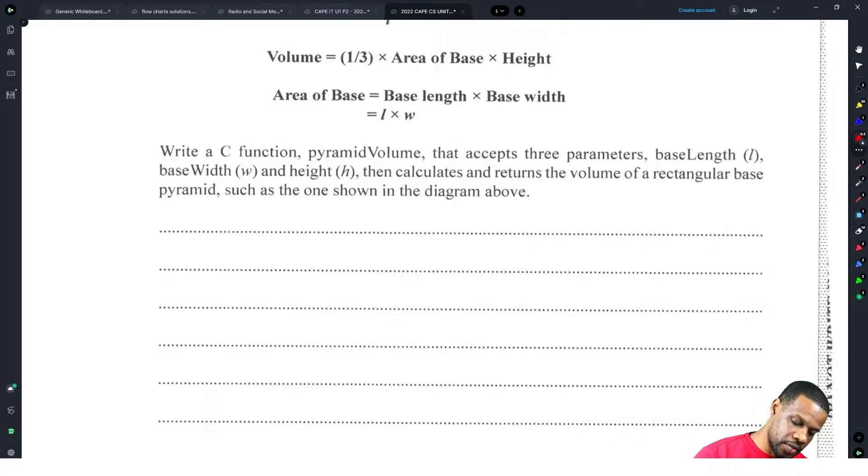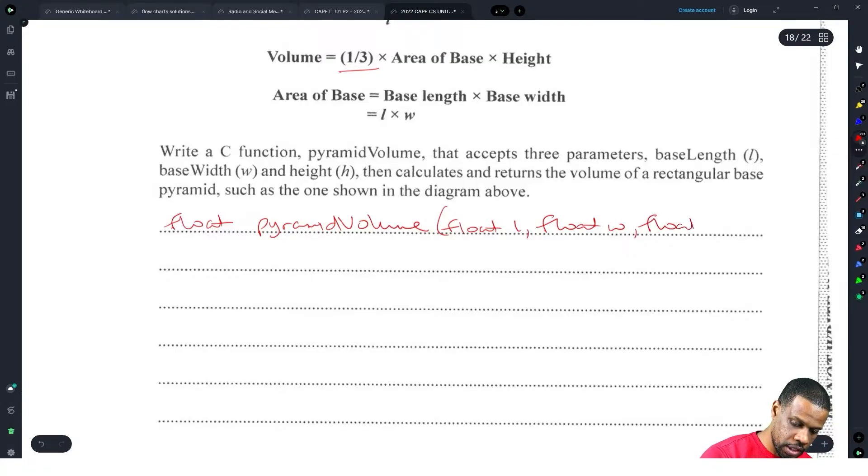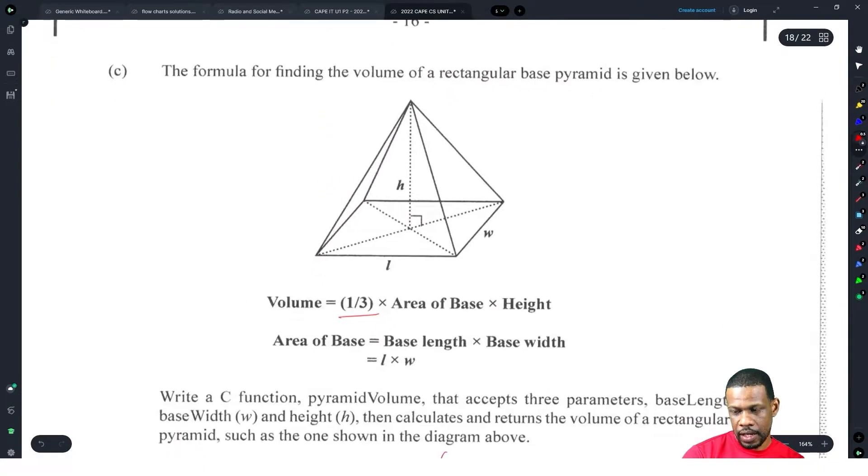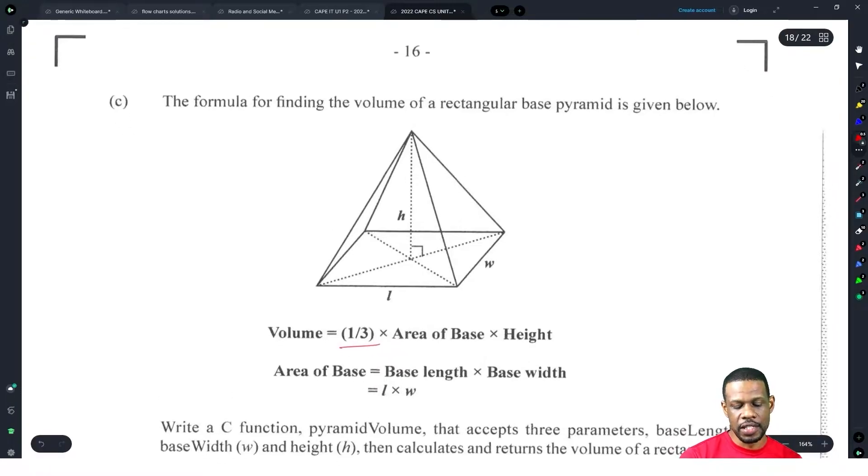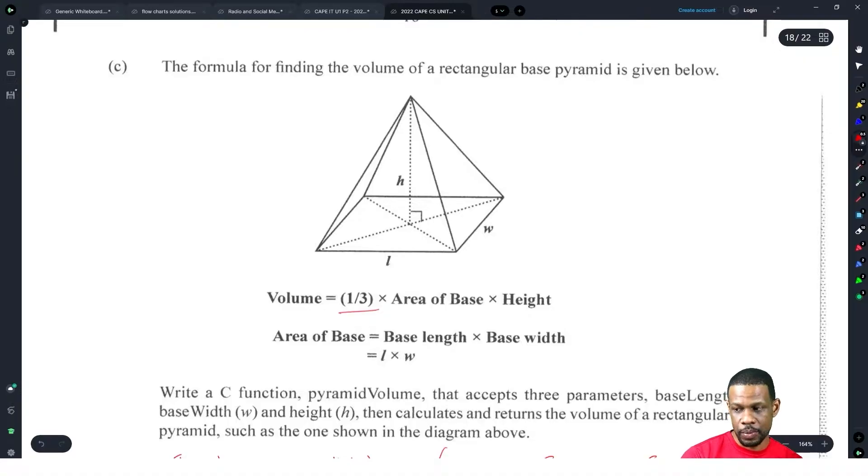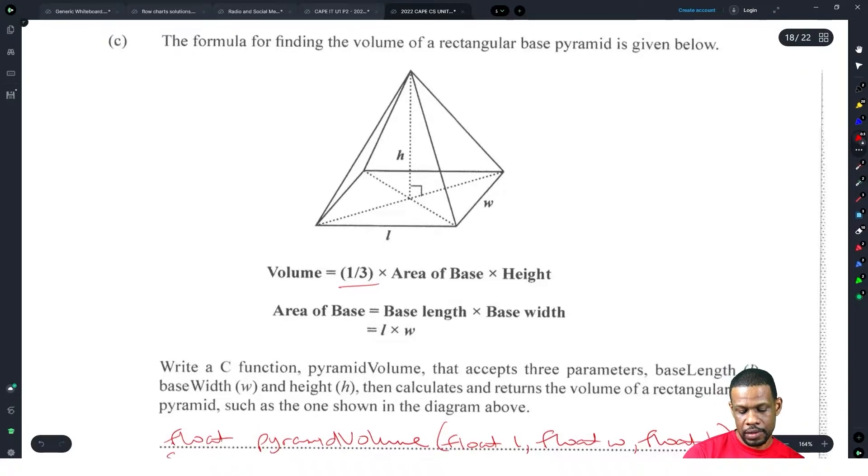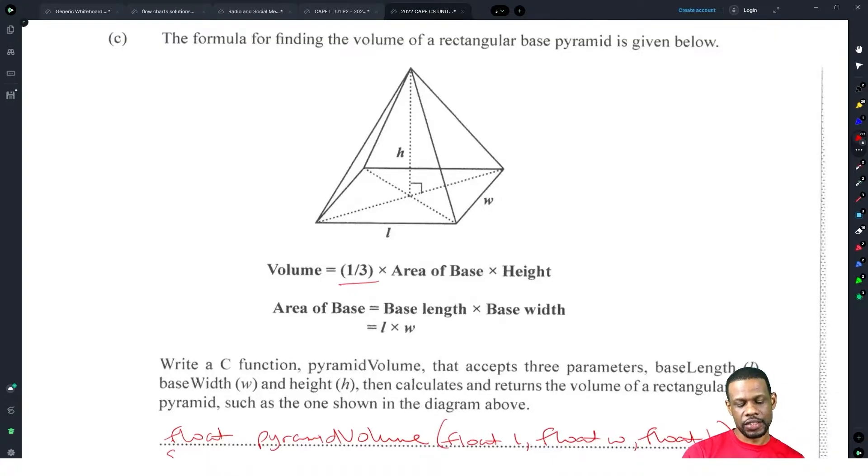It returns a value doing multiplication and multiplying by a fraction, so it will be a float function. Float pyramid volume. It's accepting parameters, so I'll put everything as a float because it could be a decimal: float l, float w, and float h. I shouldn't be mad because the exam came easy and people always ask for easy papers. I'm glad they got an easy paper.